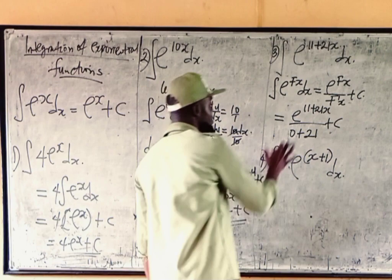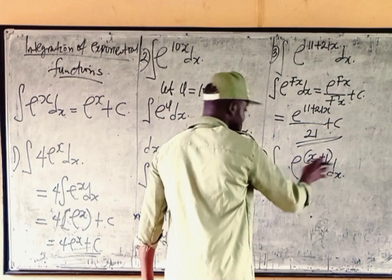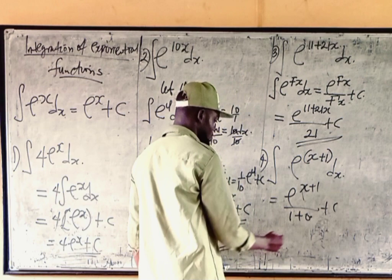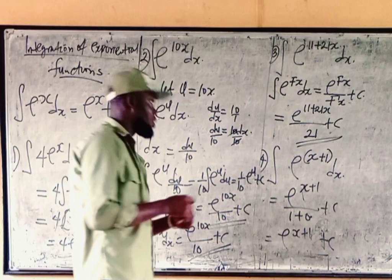Now let's apply the same rule for this. That would be equal to exponential x plus 1 over the derivative of x plus 1, which is 1 plus 0, plus c. That would be equal to exponential x plus 1 over 1 plus c. So this is the shortcut to integrating exponential functions.